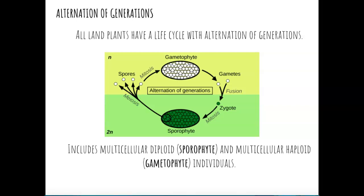Looking at the figure in the middle of the screen, starting from the right-hand side: a sperm and an egg fuse to create a zygote. That zygote undergoes mitosis to create a sporophyte. The sporophyte then releases spores created through meiosis. Those spores, once they land, go through mitosis to create a gametophyte. The gametophyte then creates gametes and the process continues — alternating between a haploid gametophyte stage and a diploid sporophyte stage.